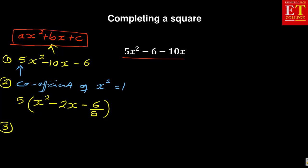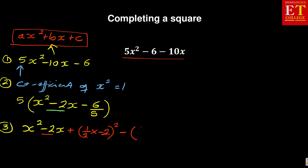When you're completing a square, what you need to focus on is that number — the coefficient of x. We're going to write x squared minus 2x, and then we introduce half the coefficient of x. The coefficient of x here is minus 2, so we add plus half times negative 2, squared. But since we introduced something, we must also take it out — minus one half times minus 2, squared.